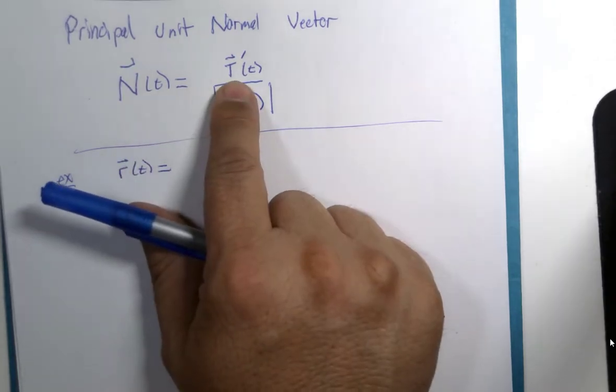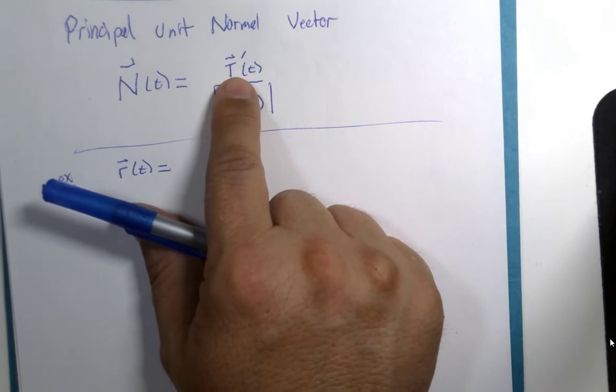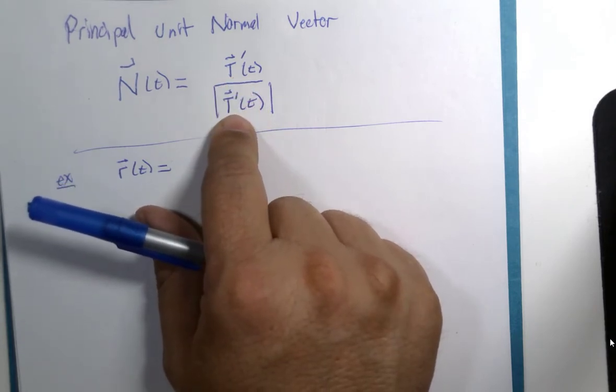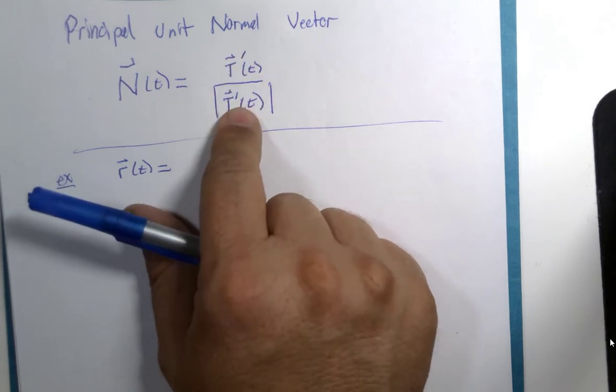Remember to calculate the unit tangent vector you had to find the derivative and divide by the magnitude, and the magnitude usually means there's a square root. So then we're going to take the derivative of that expression which could be some messy algebra, and then we're going to have to calculate the magnitude of that new expression and then divide these two expressions.